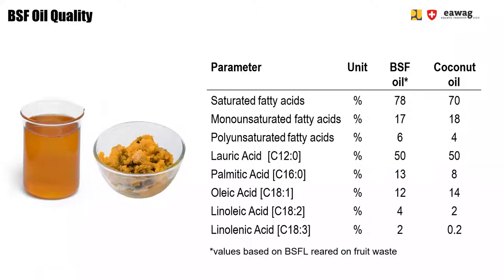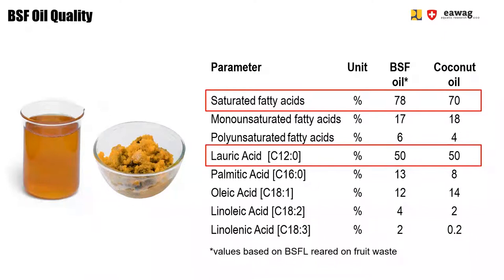In the second half of this module, we focus on BSF Oil. Here you see the fatty acid composition of BSF Oil compared to coconut oil. Fatty acids are the building blocks of fat and determine its quality. BSF Oil contains mainly saturated fatty acids, with lauric acid being the most dominant at around 50%, which is very similar to coconut oil. However, this fatty acid composition depends on the feeding substrate of the BSF larvae — a different substrate may lead to a different composition and application.